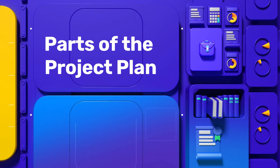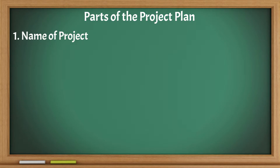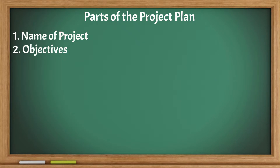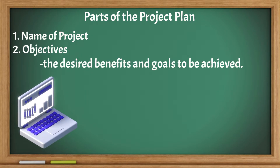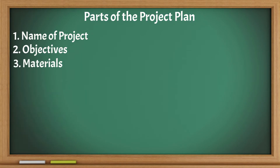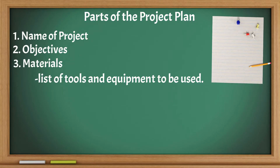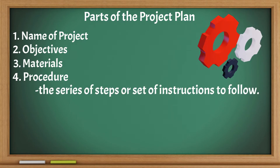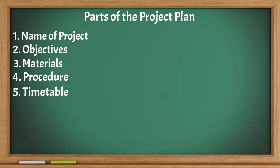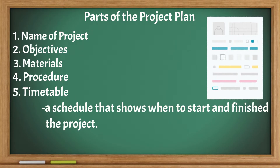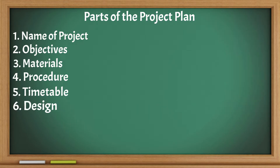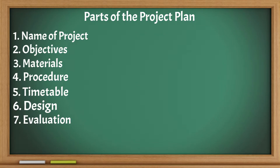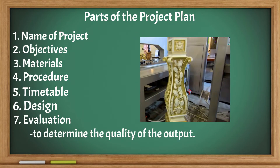Here are the parts of the project plan: Name of the project — it shows what kind of project to undertake. Objectives — the desired benefits and goals to be achieved. Materials — list of tools and equipment to be used. Procedure — the series of steps or set of instructions to follow. Timetable — a schedule that shows when to start and finish the project. Design — a preliminary sketch or outline of the project. Evaluation — to determine the quality of the output.